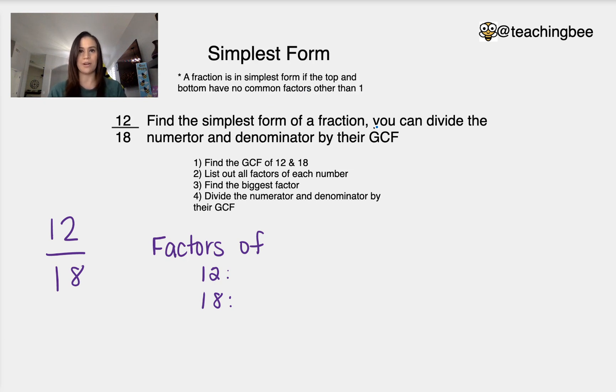We know that 12 and 18 are both even numbers which we know with an even number we could always divide by 2, but that would take a little bit longer. The best way to go sometimes and to be more accurate would be to look for the greatest common factor, which is what we're going to do today.